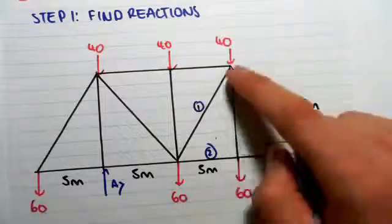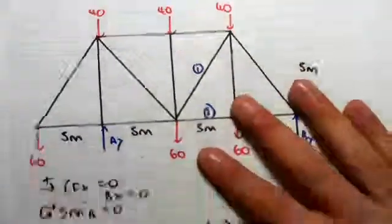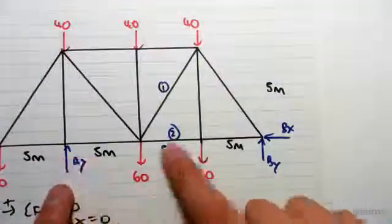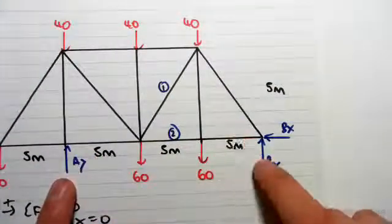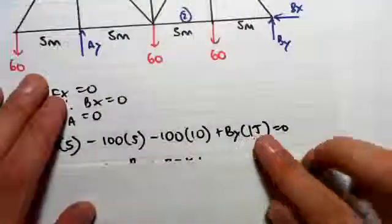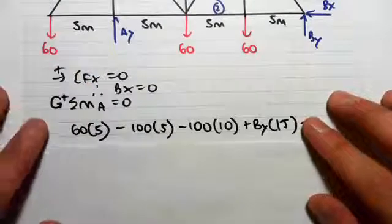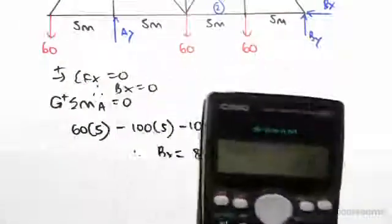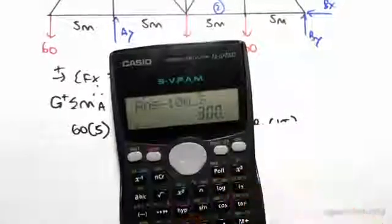We have 40 and 60, so adding those is 100. Lever arm is 10, so it's 100 by 10. Again that is going clockwise about A, so it's negative 100 by 10. And By times a lever arm of 15 meters, and that's going to be going anticlockwise, so it's By by 15 and it's positive.